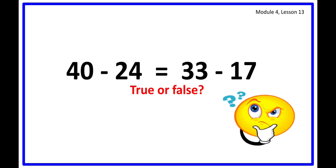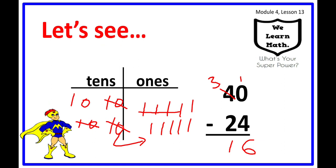Now 40 minus 24 equal to 33 minus 17, is it true or false? Now we are coming back to this, let's do the solving first. We have 40 minus 24 using our place value chart and vertical form. 40 minus 24 gives us 16.